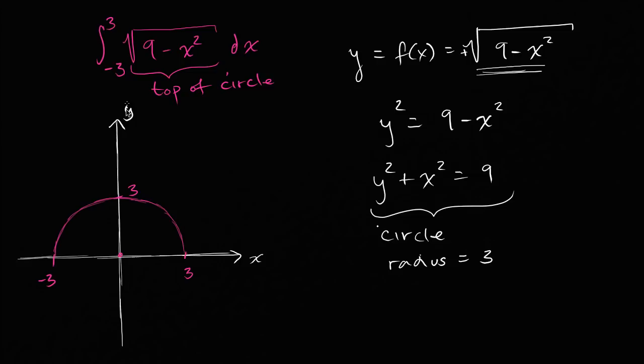So what is the definite integral from negative 3 to 3? Well, it's just the area under the curve and above the x-axis. It's the stuff that I am shading in green. Well, what's that? You don't need calculus to figure that out. You can do this with just traditional geometry.